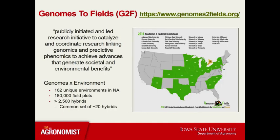Before I get into my calibration and simulation results, I want to give a brief introduction to the Genomes to Fields initiative for those who are not familiar. The Genomes to Fields initiative is a publicly initiated research initiative to catalyze and coordinate research linking genomics and predictive phenomics. A major component is the Genomes by Environment subproject. Since 2014, 180,000 field plots have been evaluated across 162 unique environments, categorized in the highlighted areas in the map above.